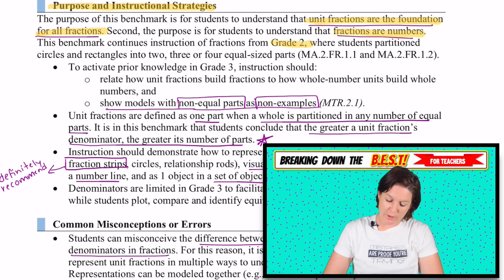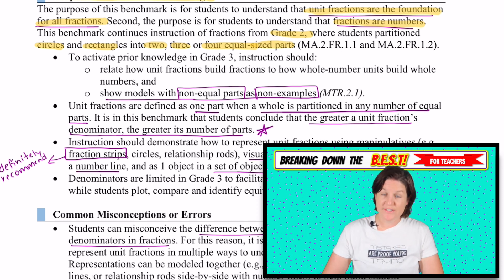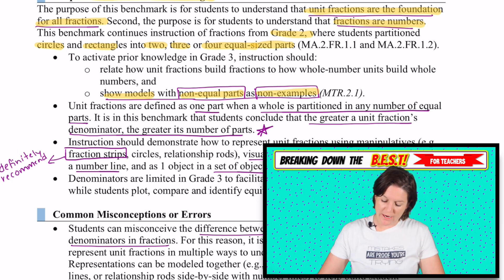Here it says that in grade two, they did partition circles and rectangles into two, three, and four equal-sized pieces. And we will be bumping that up with this benchmark. For this standard, it is important to show models that do have non-equal parts so we can see them as non-examples. And that unit fractions are defined as one part when a whole is partitioned or split, separated in any number of equal parts, as long as it's inside of those denominator limits.